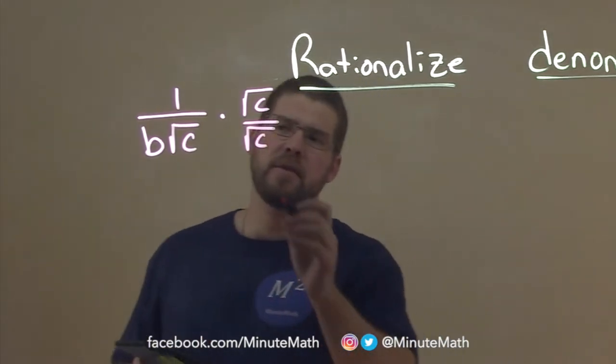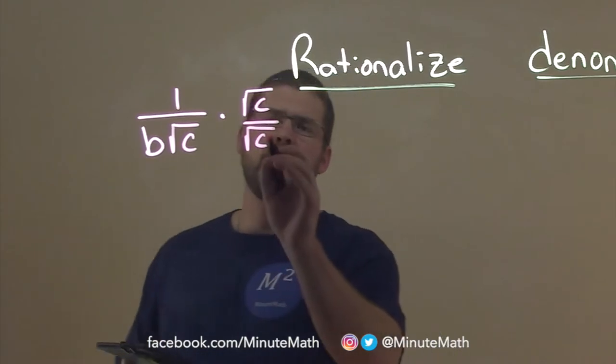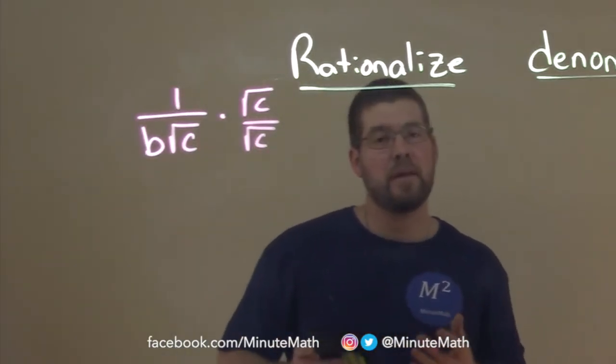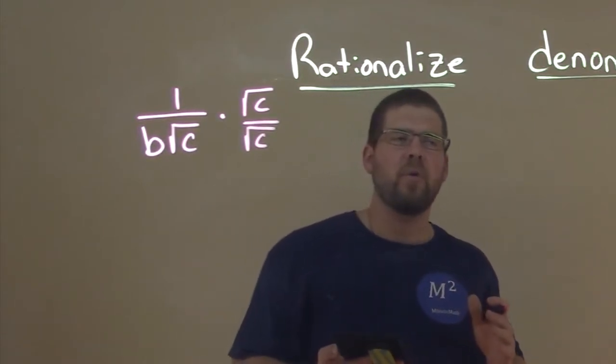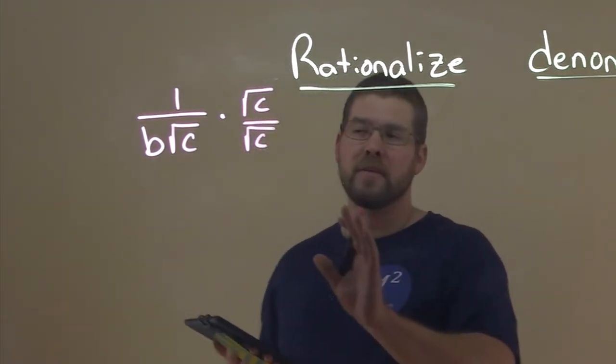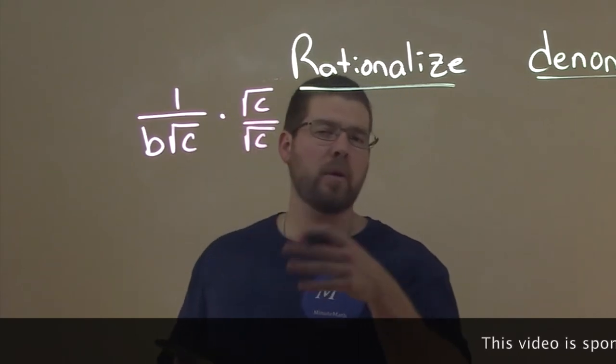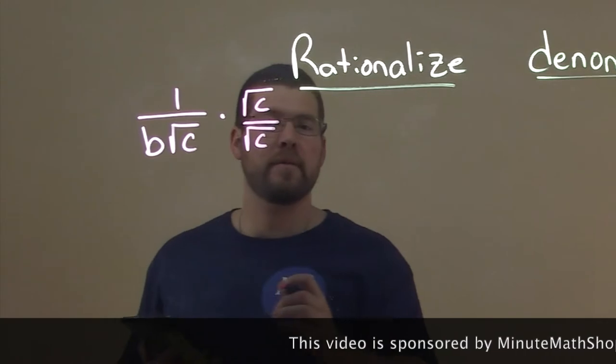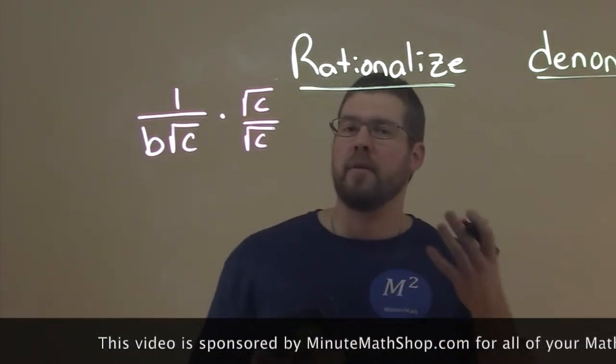And what that does is - and we'll see some examples, so I don't want to get bogged down with the variables here - but we know that square root of c over square root of c is essentially 1. And so multiplying an expression by 1 doesn't really do anything. So this is legal for us, but it allows us to manipulate this to get the square root out of the denominator here. Because square root of c times square root of c is just c and now we no longer have a square root in the denominator.